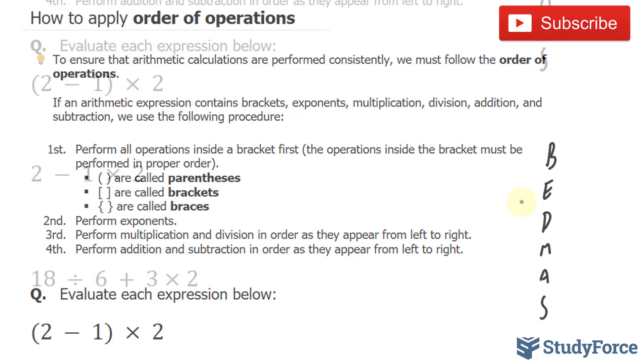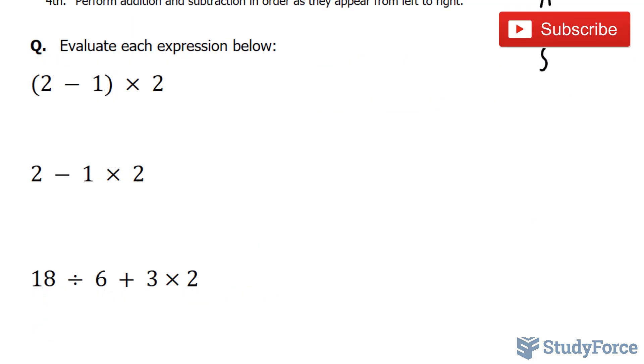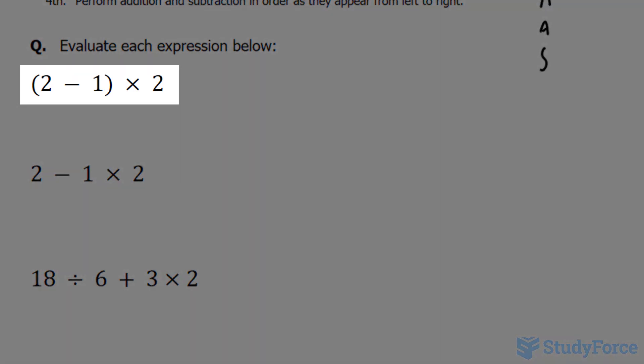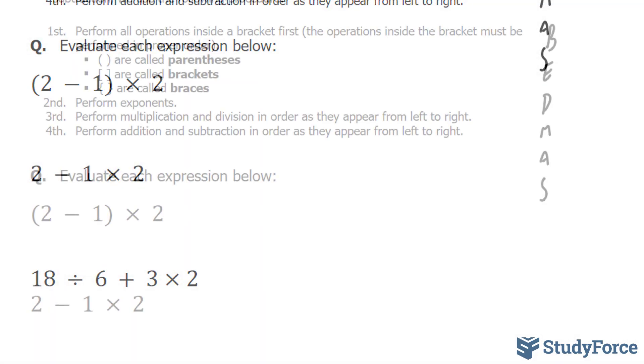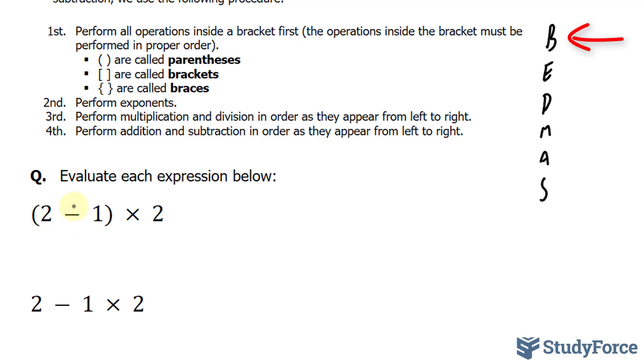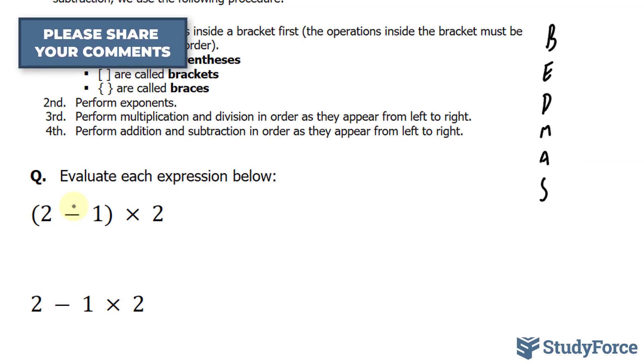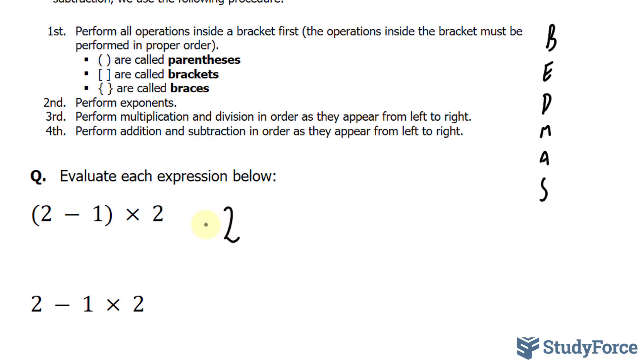The question is simple. Evaluate each expression below. Evaluate means find an answer, where an expression is simply a mathematical statement that doesn't contain an equal sign, so you're really not solving for any variable. In our first example, we have (2-1)×2. According to the acronym BEDMAS, we have to perform what's inside the brackets first. 2 minus 1 is 1 times 2 is 2. So our answer here is 2.